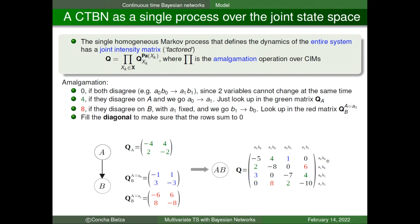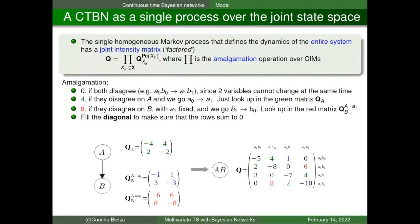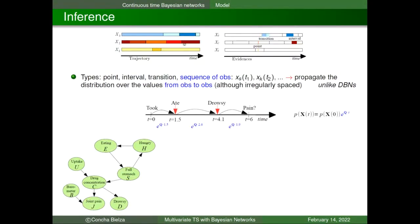Unlike DBNs, CTBNs require no time granularity and explicitly represent temporal dynamics. We can view the CTBN as a single process over the joint state space by building a large Q matrix from local CIMs. With two binary variables we get four joint states; the anti-diagonal entries are zero because two variables cannot change simultaneously. The entry for a joint transition where only one variable changes is read directly from the corresponding local CIM.